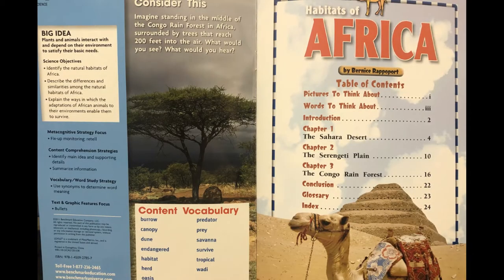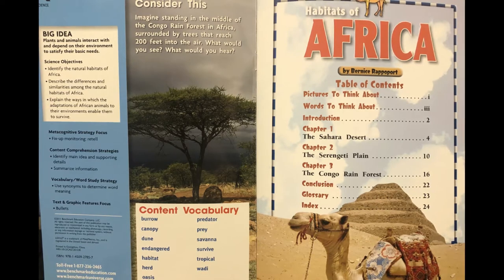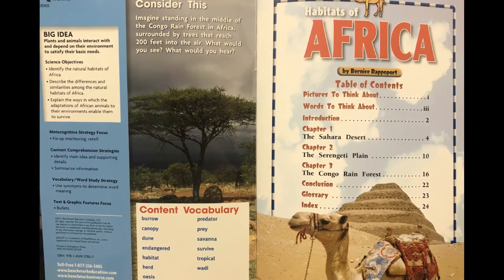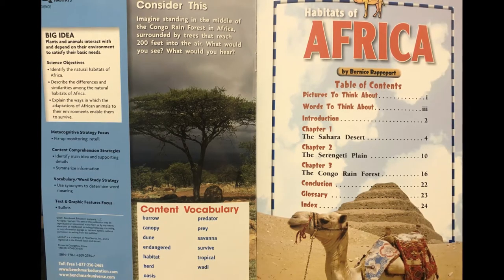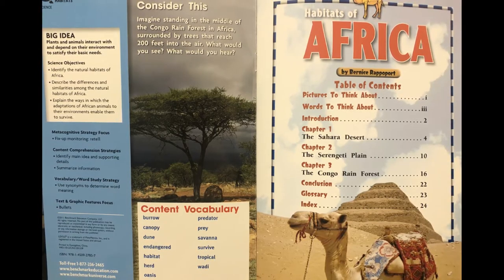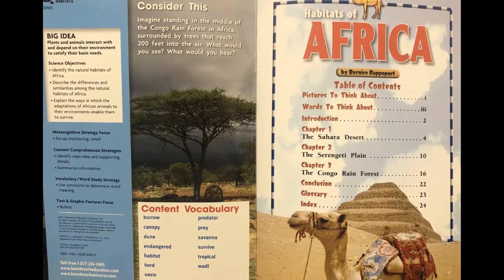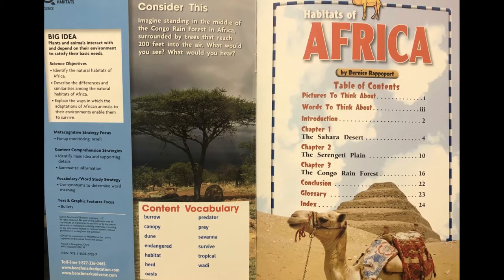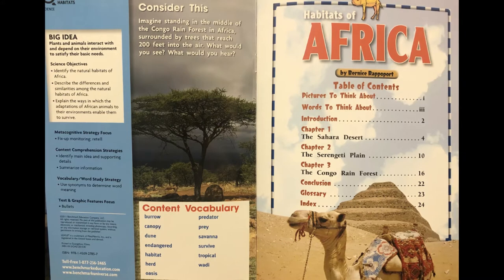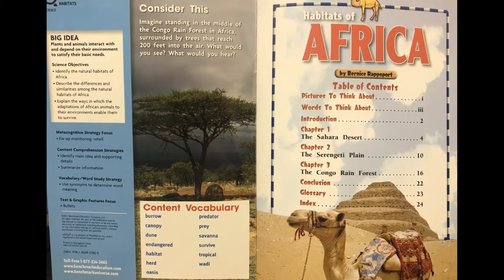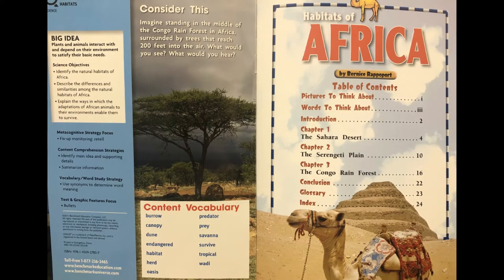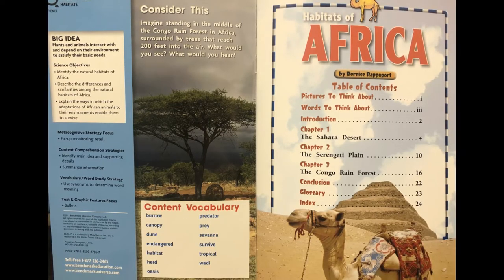We're going to start by opening our book to the front inside cover. Here we can see our big idea: plants and animals interact with and depend on their environment to satisfy their basic needs. Our science objectives are to identify the natural habitats of Africa, describe the differences and similarities among them, and explain the ways in which the adaptations of African animals to their environments enable them to survive.